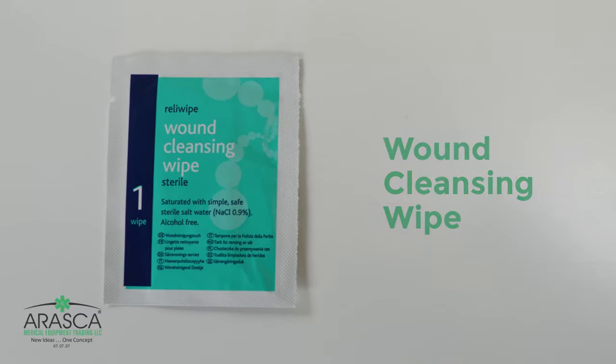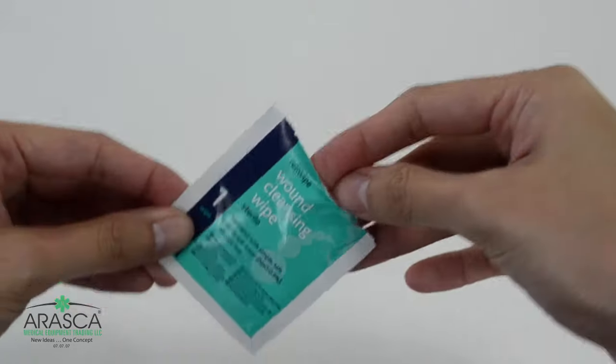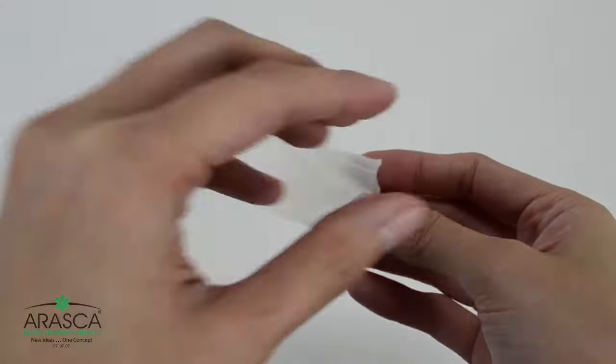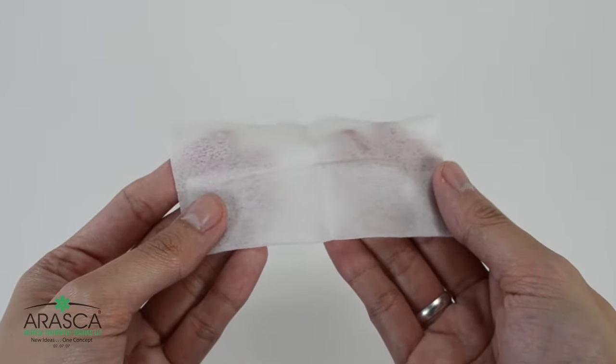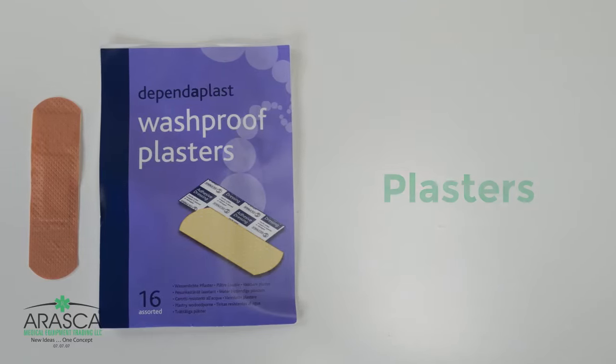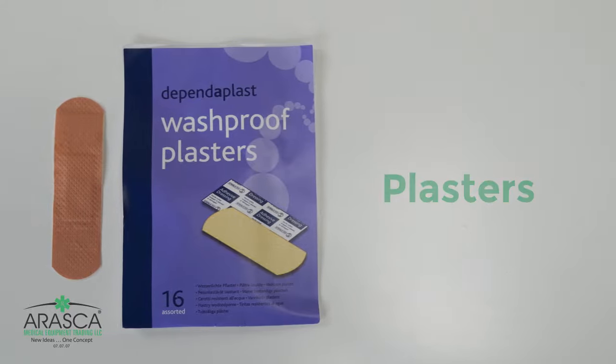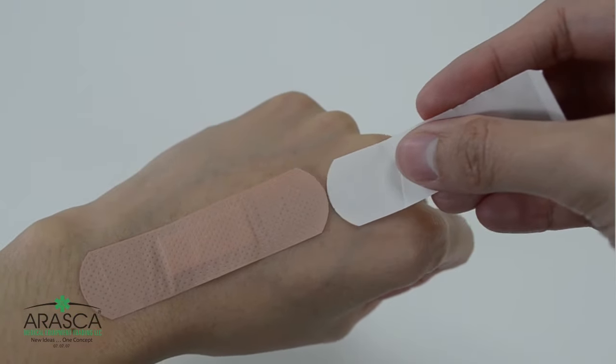Alcohol or non-alcohol cleansing wipes are used to clean the skin surrounding the wounds before applying plaster or a wound dressing. Plasters are used to cover small cuts and grazes for protection and healing.